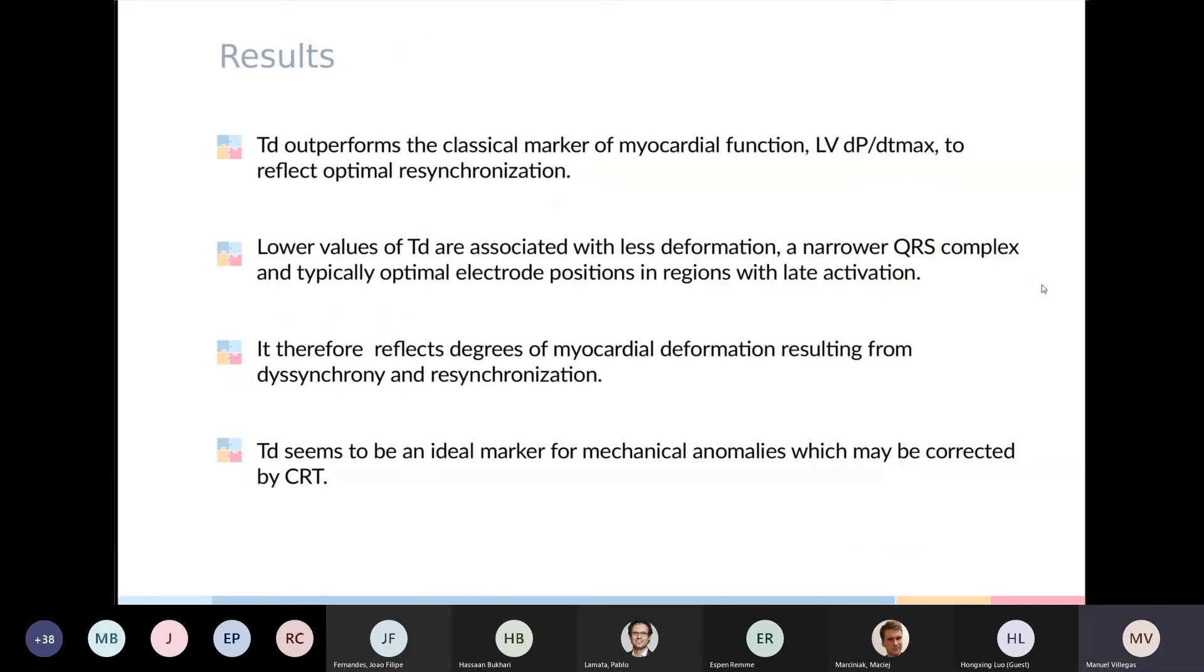So the results of these studies showed that the index TD actually reflects the myocardial deformation resulting from dyssynchrony and resynchronization, as lower values are associated with lower deformation, narrower QRS complex, and a typically optimal electrode position. It also outperforms the classical marker of myocardial function, dP/dt max, and it therefore seems to be an ideal marker for mechanical anomalies that may be corrected by CRT.